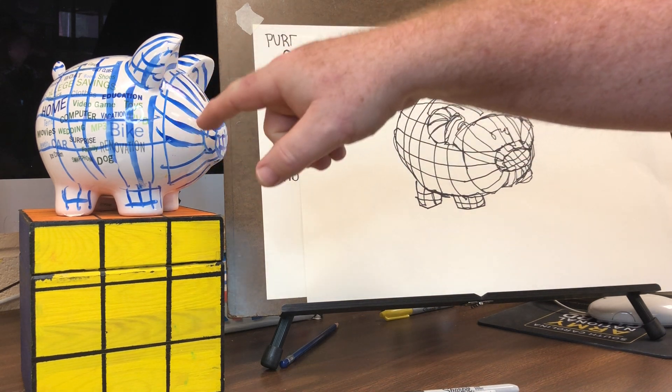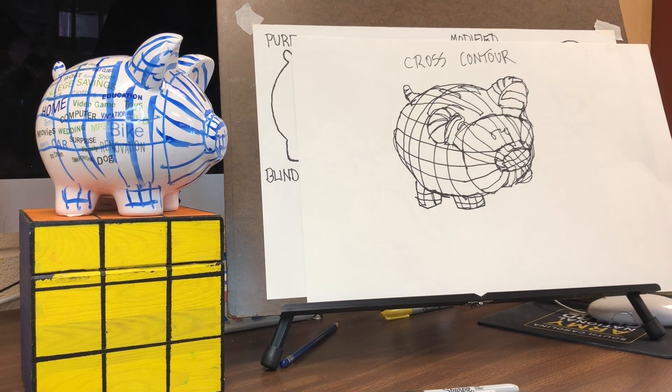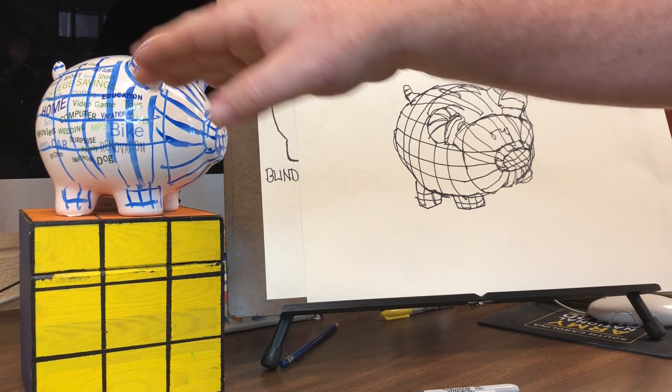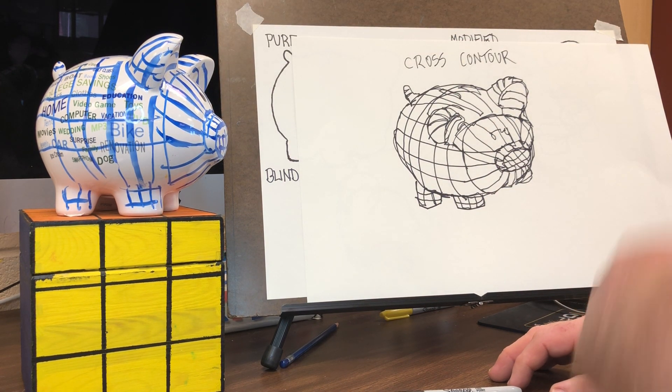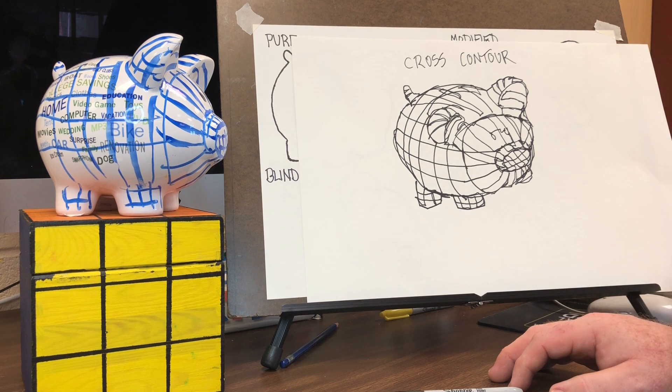So that's it, contour line drawing. I need one of each type: pure, just the outline; modified, outline but also major details and interior shapes; blind, not looking at all, it should look wacky when you're done; and then cross contour where you can take a dry erase marker or sharpie or just use your eye and imagination and try to wrap that. So there you go, that's what I'm looking for in this assignment.